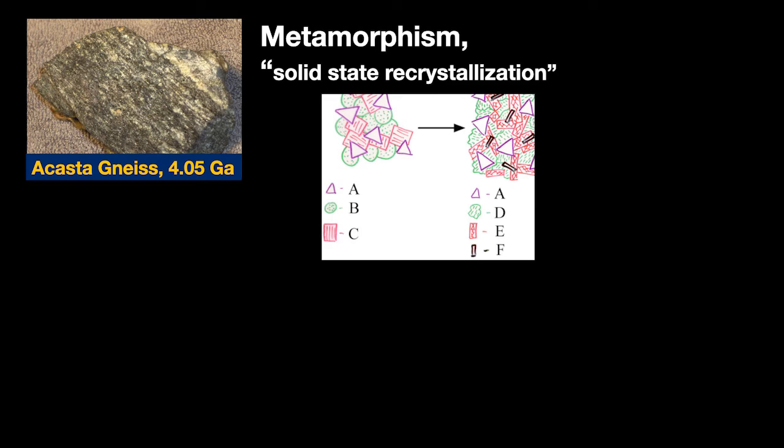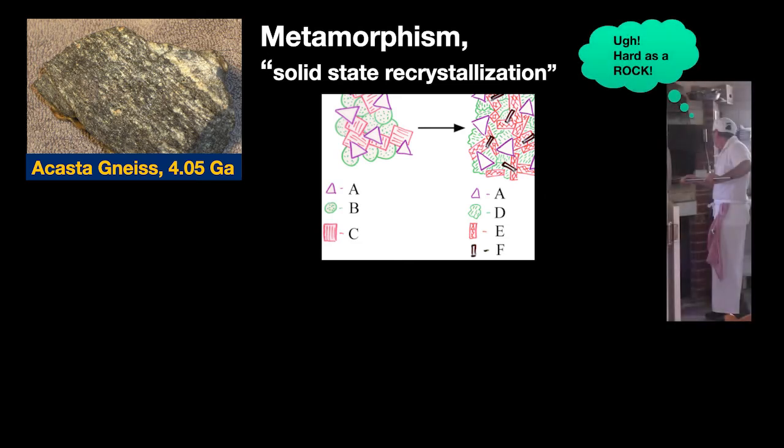The key idea, however, is that the mineral changes take place without melting. The elemental constituents — silicon, oxygen, aluminum, potassium — just move around in the solid state, hence solid-state recrystallization. And if that sounds like science-speak, just consider cooking. You start with some flour, yeast, water, and salt, you heat it up, and out comes something different — maybe even better, like a pizza crust.